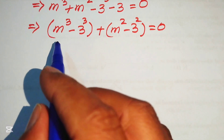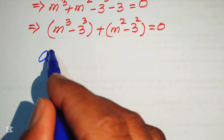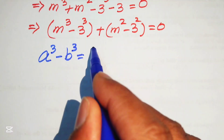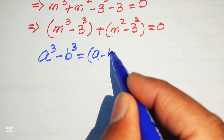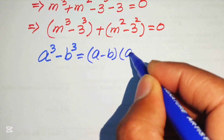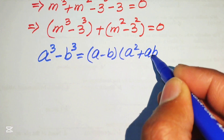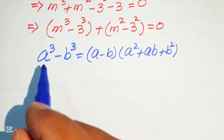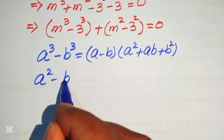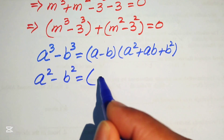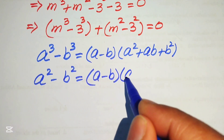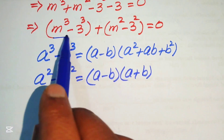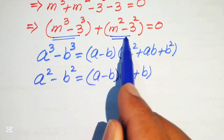Here we need two nice formulas. We know that a cubed minus b cubed equals a minus b times a squared plus ab plus b squared. Similarly, the difference of squares formula: a squared minus b squared equals a minus b times a plus b. We apply the cubic formula on the first term and the square formula on the second term.